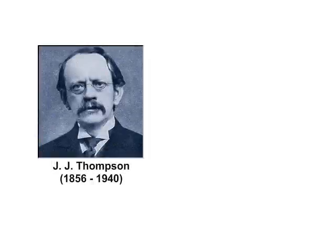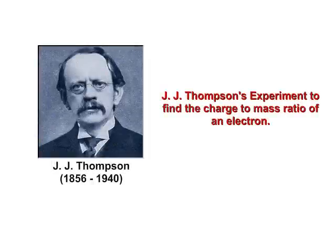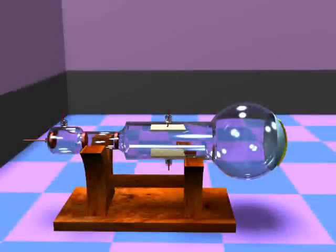This tutorial is presented in view of JJ Thomson's experiment to find the charge to mass ratio of an electron. The setup of the experiment is like this. A cathode ray tube is like this.